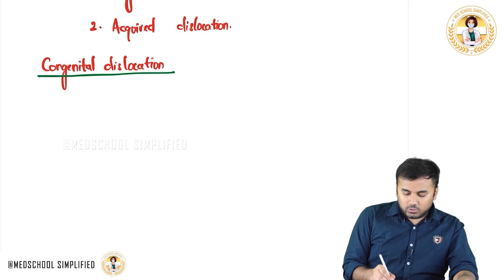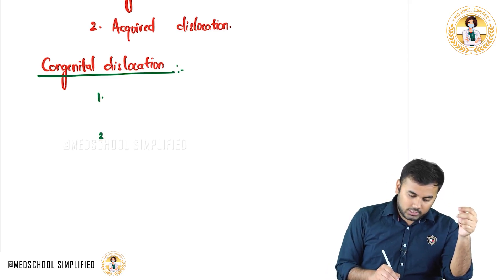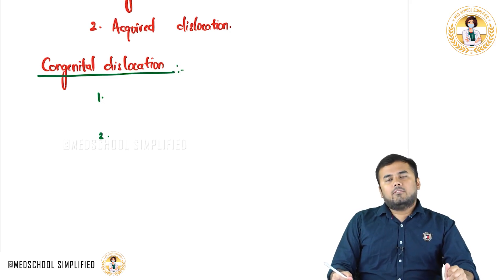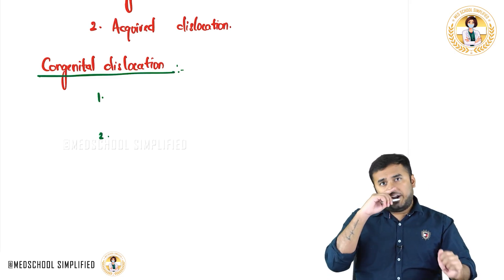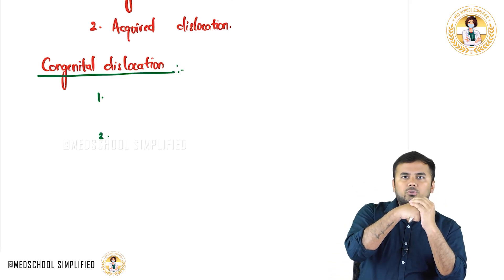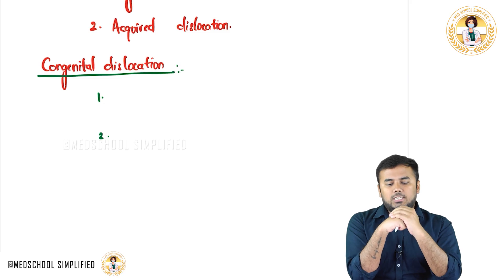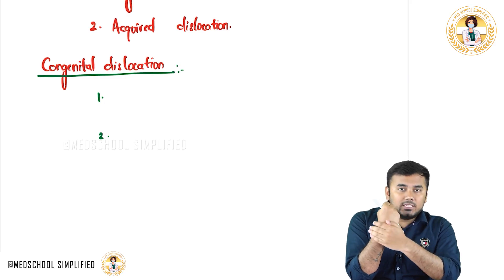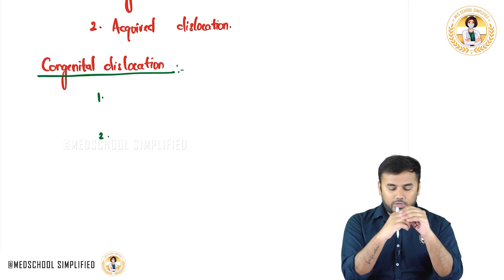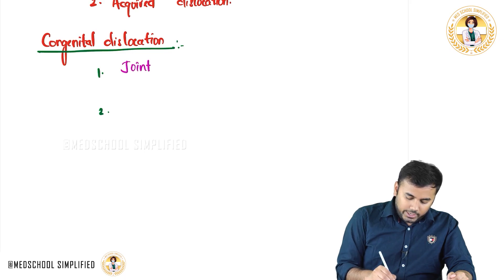In case of congenital dislocation, there are two important causes. Cause number one: by the time of birth, if the joint capsule is very loose. The acetabulum receives the head of the femur, stabilized by capsular ligaments and the acetabular labrum. If these ligaments are weak, the joint capsule becomes too loose and flexible, leading very easily to subluxation or dislocation.